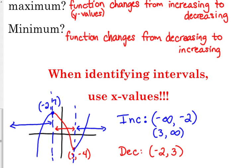And, I'm using my x values to describe where it is occurring. And then, from positive 3 to infinity, my y values are increasing. But, the where is from 3 to infinity. The x values describe where. The y values describe what.